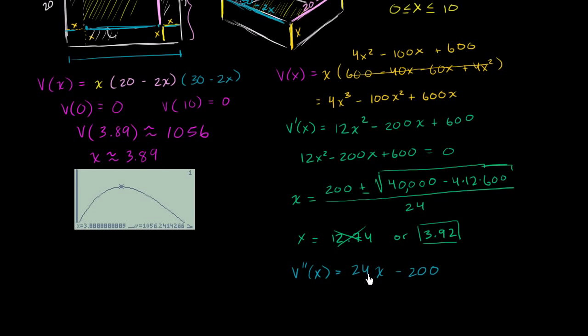V prime prime of x is going to be equal to 24x, 24 times x to the first minus 200, minus 200. And you can just look at inspection that this number right over here is less than 4. So this thing right over here is going to be less than 100. You subtract 200. So we can write the second derivative at 3.92 is going to be less than 0. So because this is less than 0, we are concave downwards.